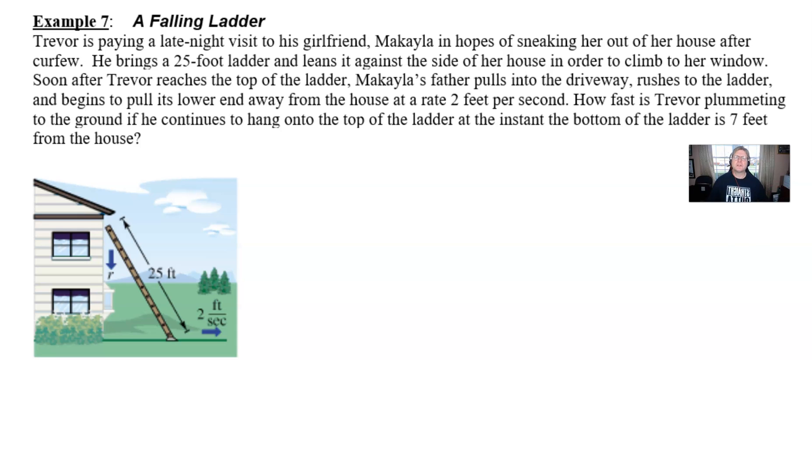Trevor is paying a late night visit to his girlfriend Makayla in hopes of sneaking her out of her house after curfew. He brings along a 25 foot ladder and leans it against the side of her house in order to climb to her window.